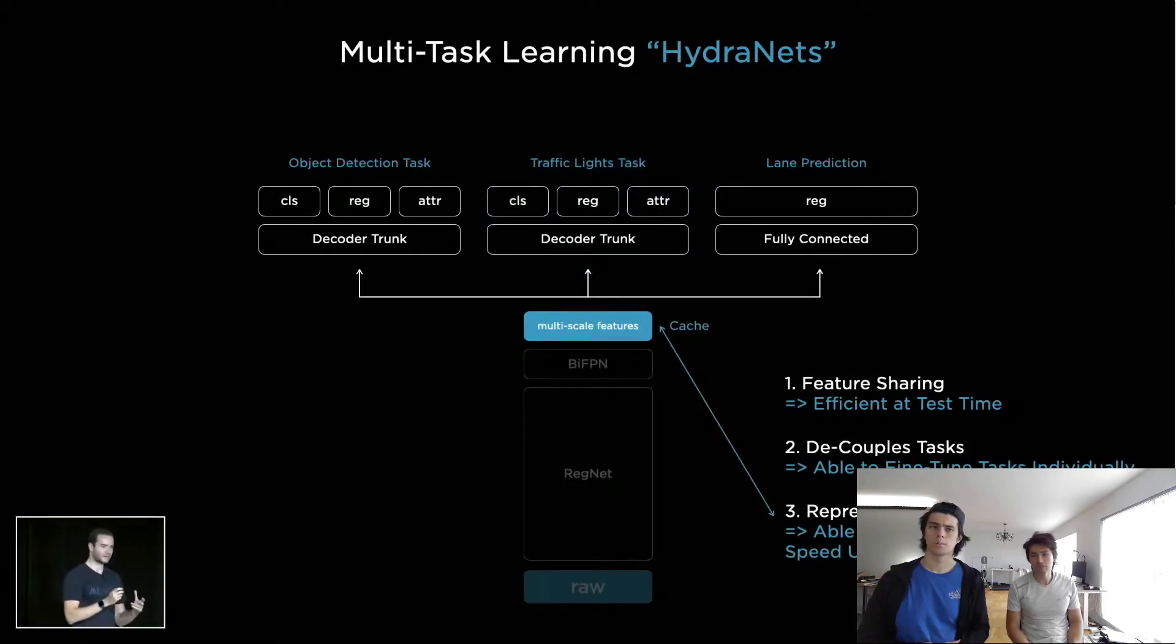What we do fairly often is we actually cache these features to disk. When we are doing these fine-tuning workflows, we only fine-tune from the cached features up and only fine-tune the heads. So most often in terms of our training workflows, we will do an end-to-end training run once in a while where we train everything jointly, then we cache the features at the multi-scale feature level and then we fine-tune off of that for a while.